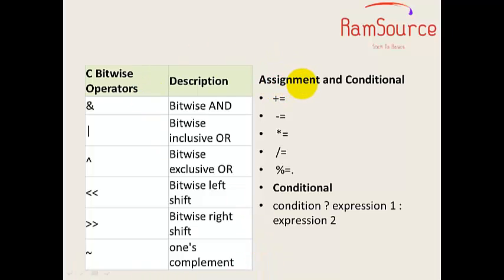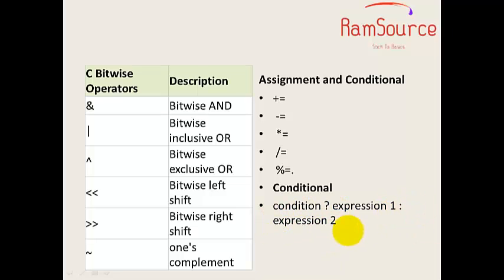And obviously, there is assignment and conditional. Assignment uses equal to and so on — that is the arithmetic operator shorthand. So if it's a plus-equal-to one, that means a equal to a plus one. And here the conditional operators: in the conditional operator, the if-condition uses what is called a ternary operator — the question mark — also called the ternary or conditional operator. If the condition is true, the first expression executes; otherwise, the second expression executes, which is the false condition.